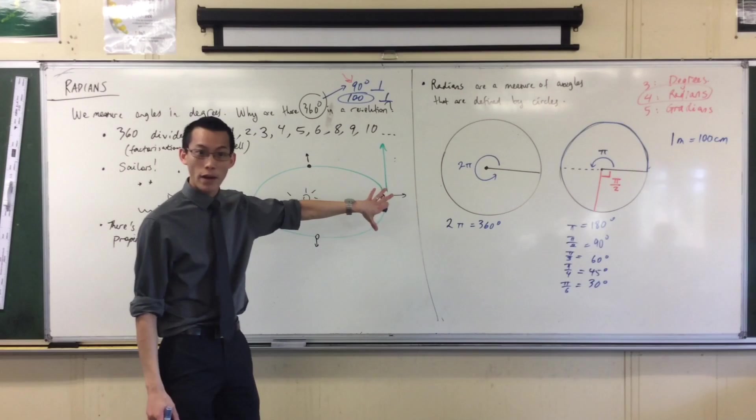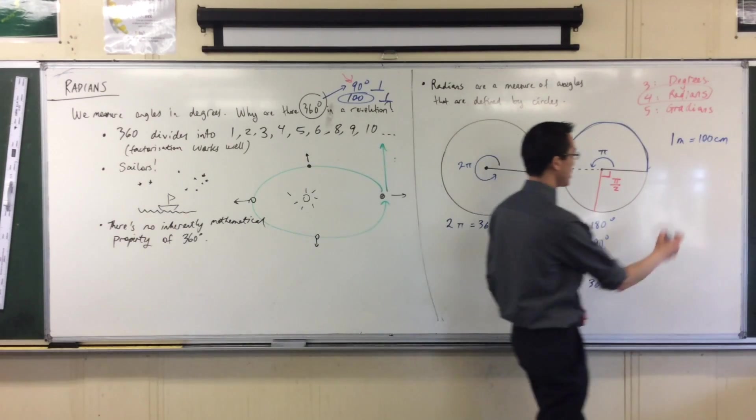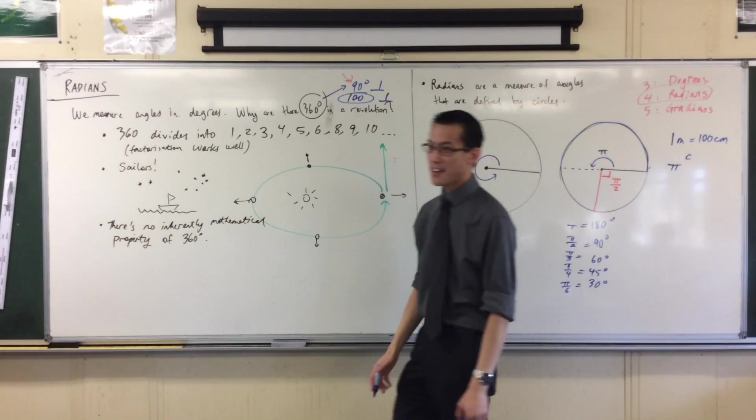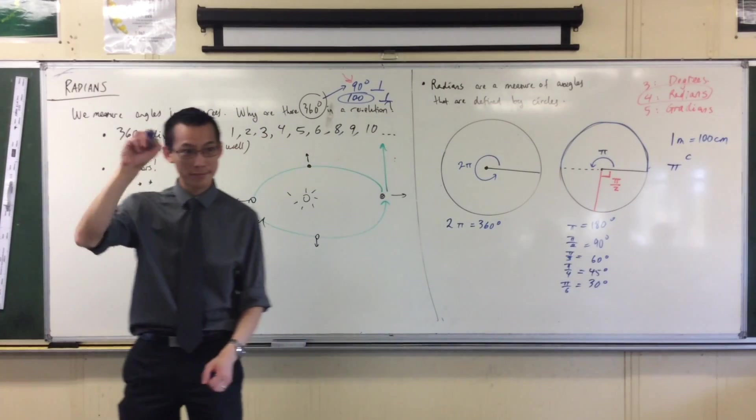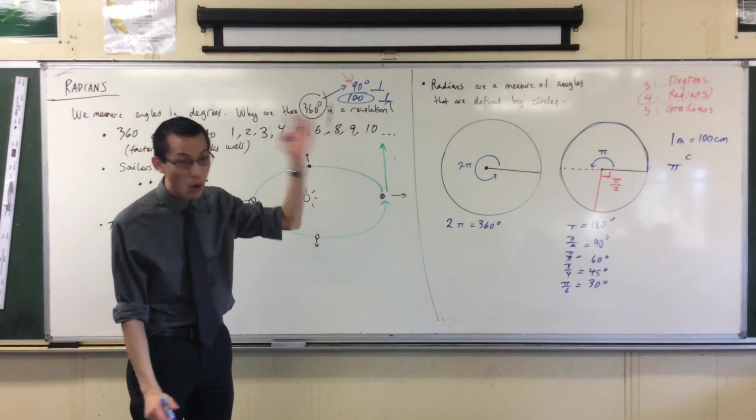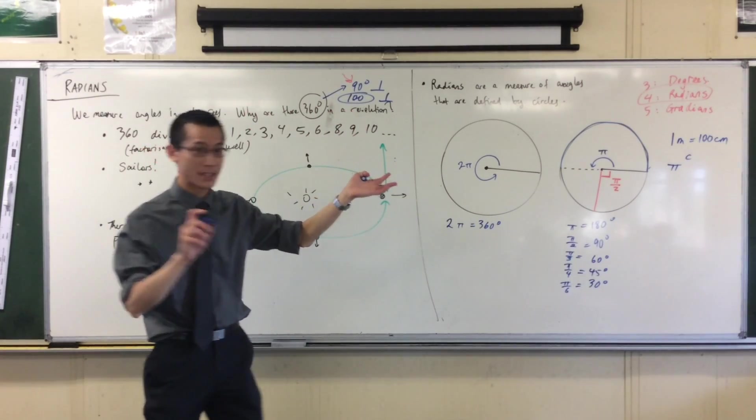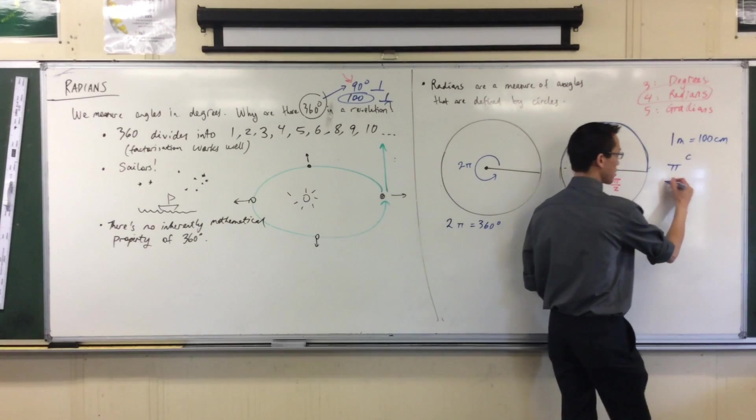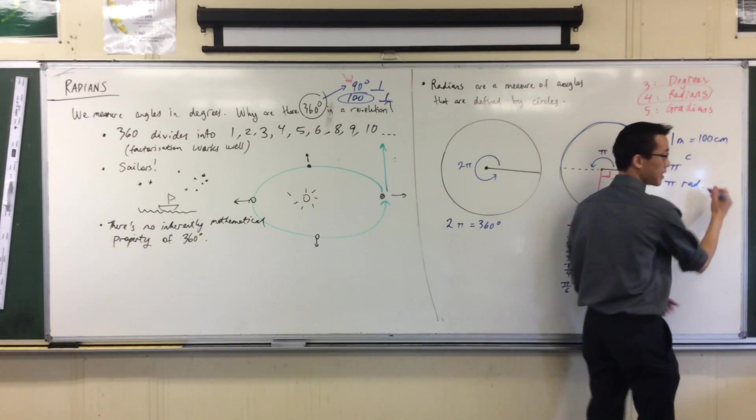There is a unit symbol for radians. It looks like this. I know that looks like a C, but it's actually an incomplete circle. Like, it's a major arc in a circle. Because that symbol looks so much like a degree symbol, when people are writing radians and they want to be unambiguous, honestly, they'll write this.